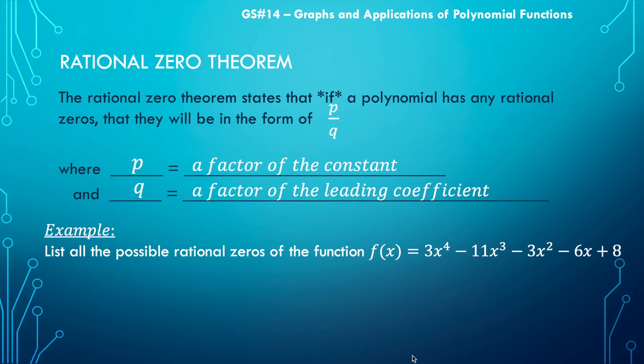So now let's pull this statement apart. If a polynomial has a rational zero, if means there may or may not be one. And what does it mean to have a rational zero? Well, what does it mean to have a zero? Let's go there. A zero is nothing more than an x-intercept.